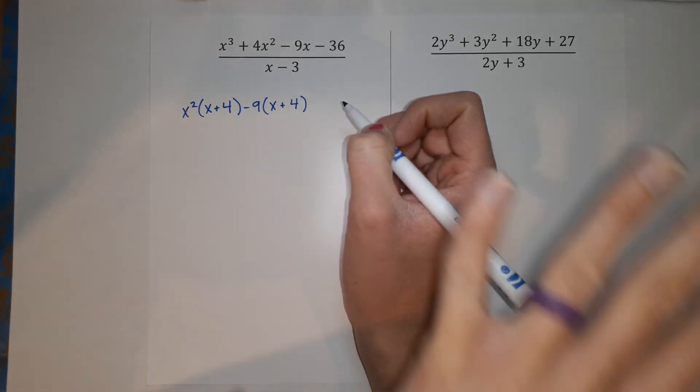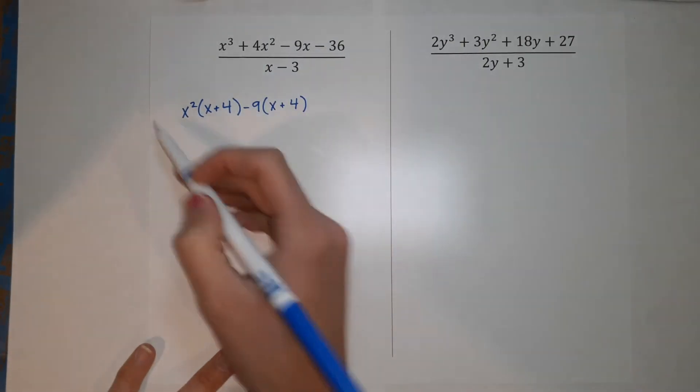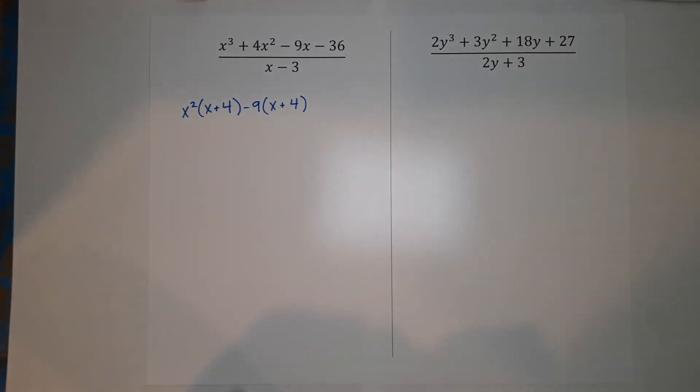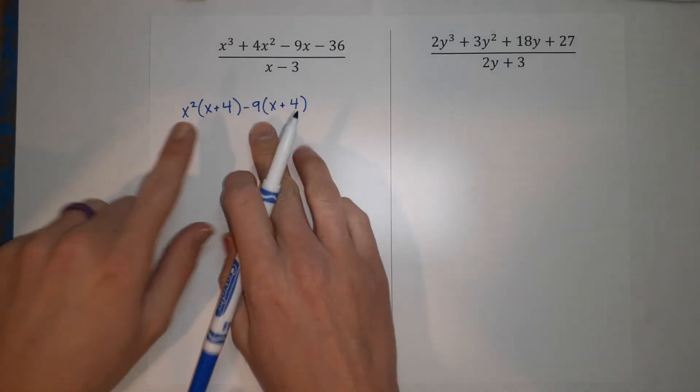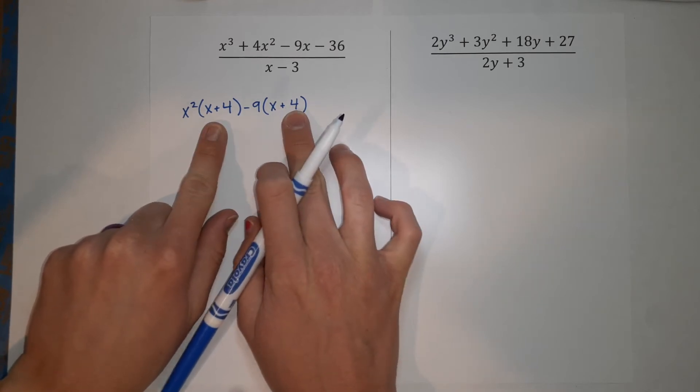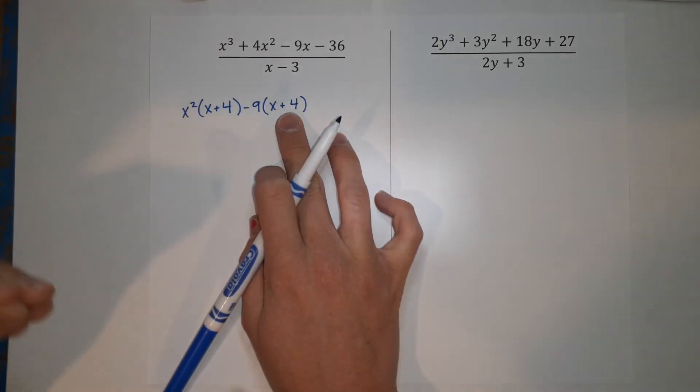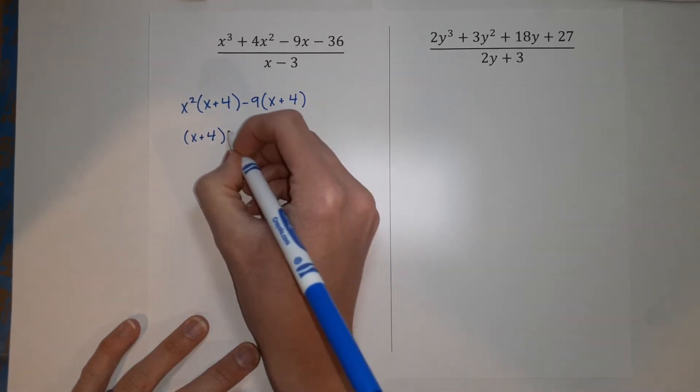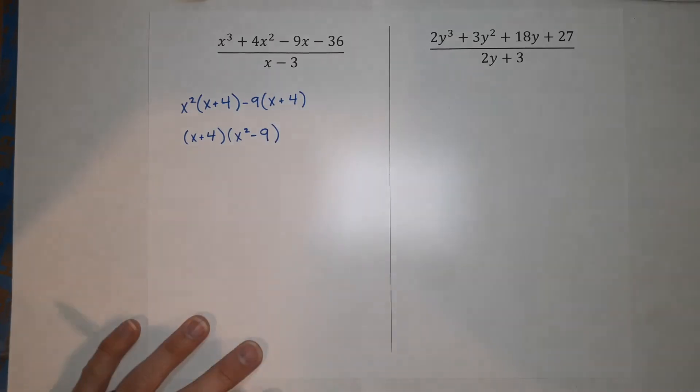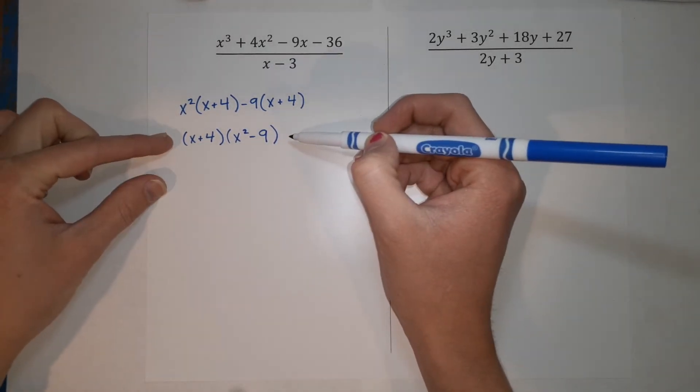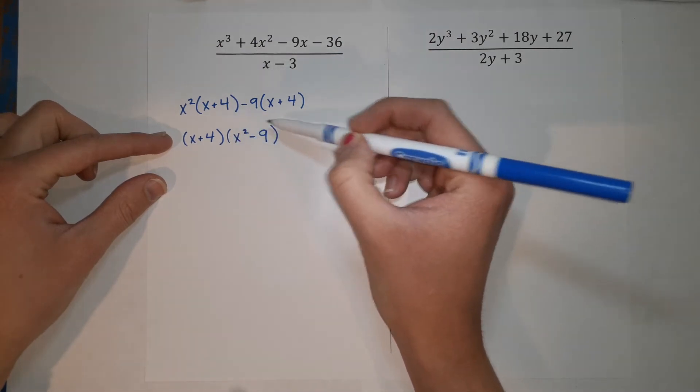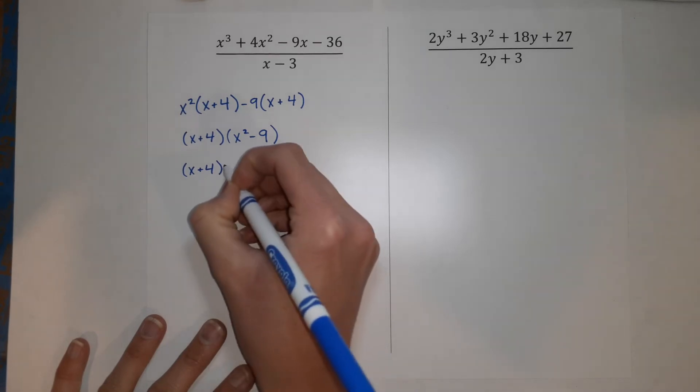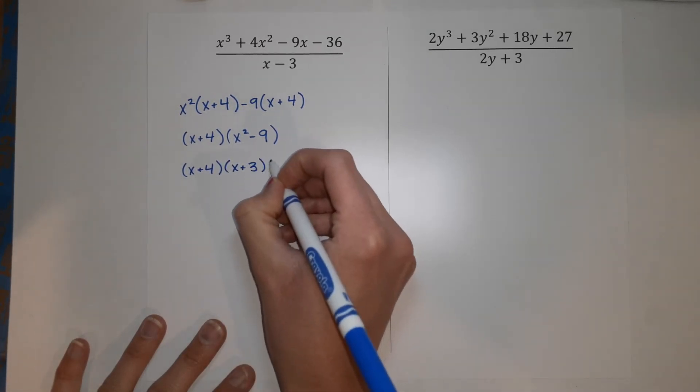Again, if you're getting a little lost, that's okay. Check out those other factoring videos. Now this is all still over that x minus three, but I'm going to get it all the way factored before I place it back over that x minus three. So now what we do next is I notice what is the same between these guys. They both have an x plus four. So now I'm going to pull that x plus four out. So I'm going to have x plus four and what is left is x squared minus nine. Now I can still factor this further. This x squared minus nine is a difference of two squares. So, factoring that it will be x plus three times x minus three.